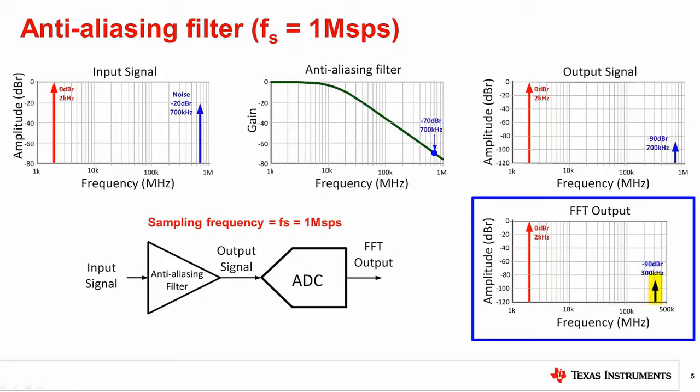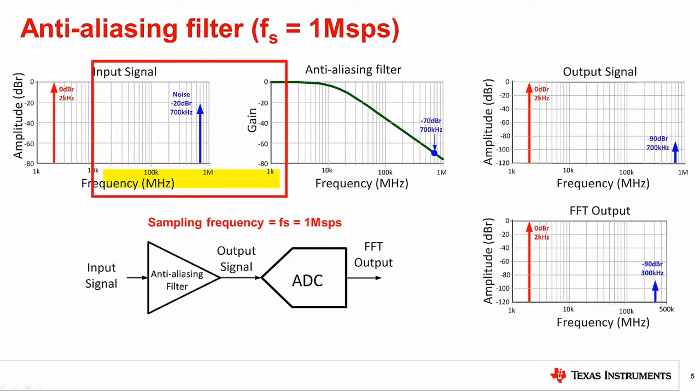After the filter, you can see that the noise signal has been attenuated significantly. The attenuated noise signal will still alias into the signal band for the converter, but it will ideally be below the noise floor, so it will not be visible.